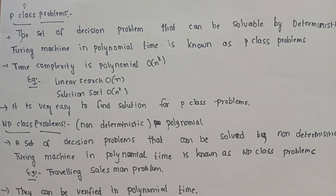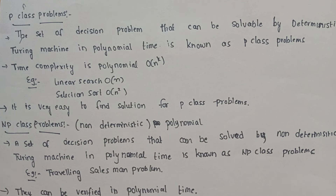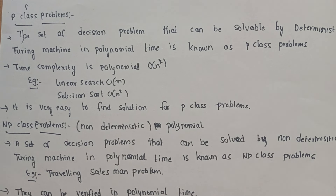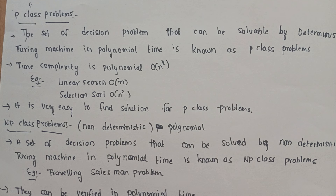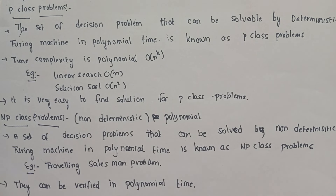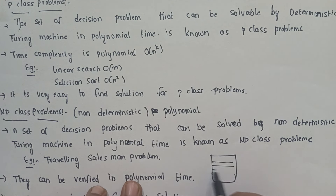The time complexity to solve these problems depends on the problem. The algorithm is non-deterministic polynomial. We solve these NP class problems using non-determinism. For example, the traveling salesman problem is an NP class problem.